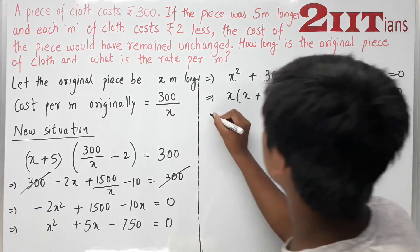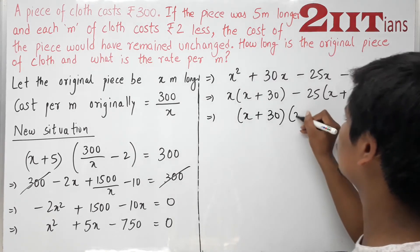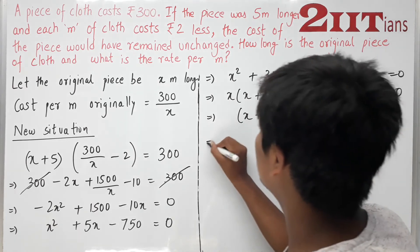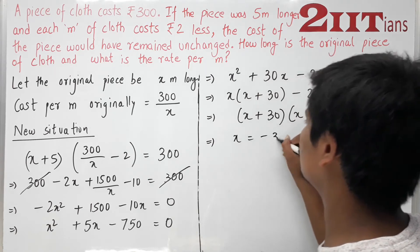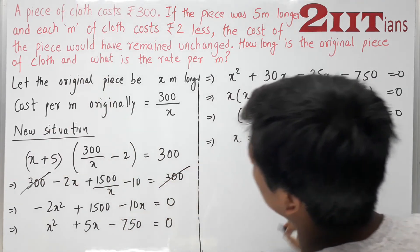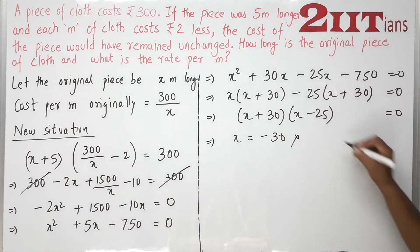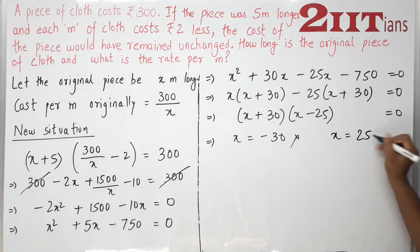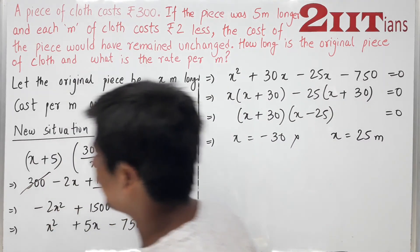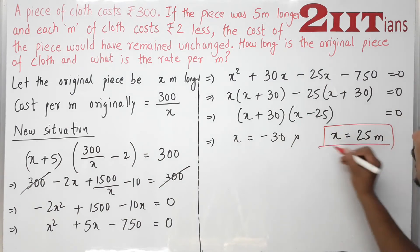Taking common factors: x(x + 30) − 25(x + 30) = 0, so (x + 30)(x − 25) = 0. This gives x = −30 or x = 25. Since the length of cloth can never be negative, x = 25 meters.